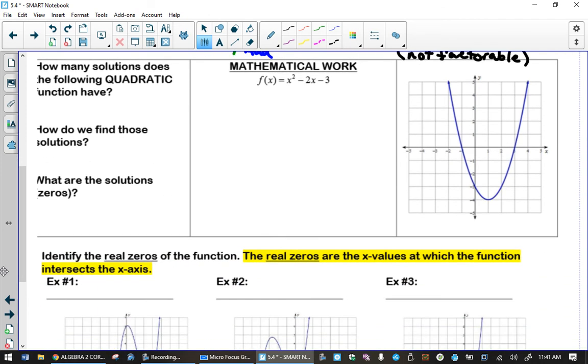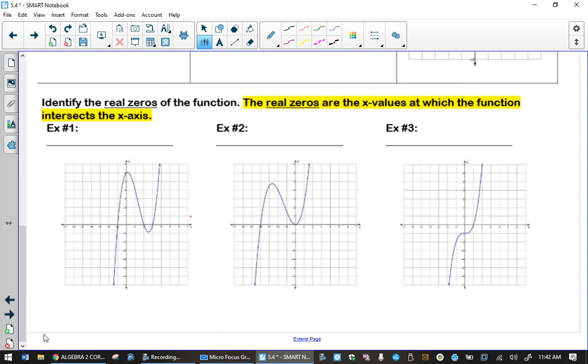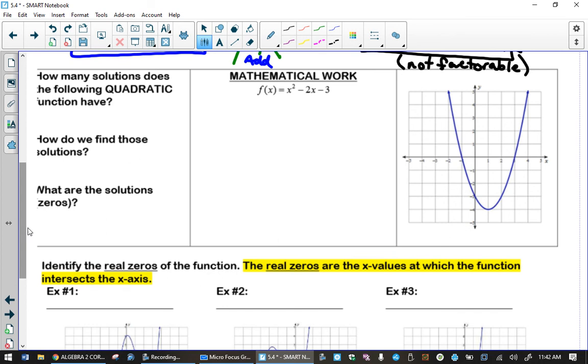Alright, so now that our review is done, the main purpose of today is to start talking about how do we find real zeros of any function, any polynomial function that we may come across. In unit 4, we learned how to find the zeros of a quadratic function, so we're going to review that quickly today with just the quadratic function and talk about how do we extend that same idea to now look at functions that look a little bit crazier, like these three examples at the bottom of your notes. Those are all cubic functions. Alright, so, how many solutions does the following quadratic function have? Well, if you remember where solutions are, they are the places where the function's graph comes in contact with the x-axis. Where does this graph cross the x-axis? And there's two places where it happens, so there are two solutions.